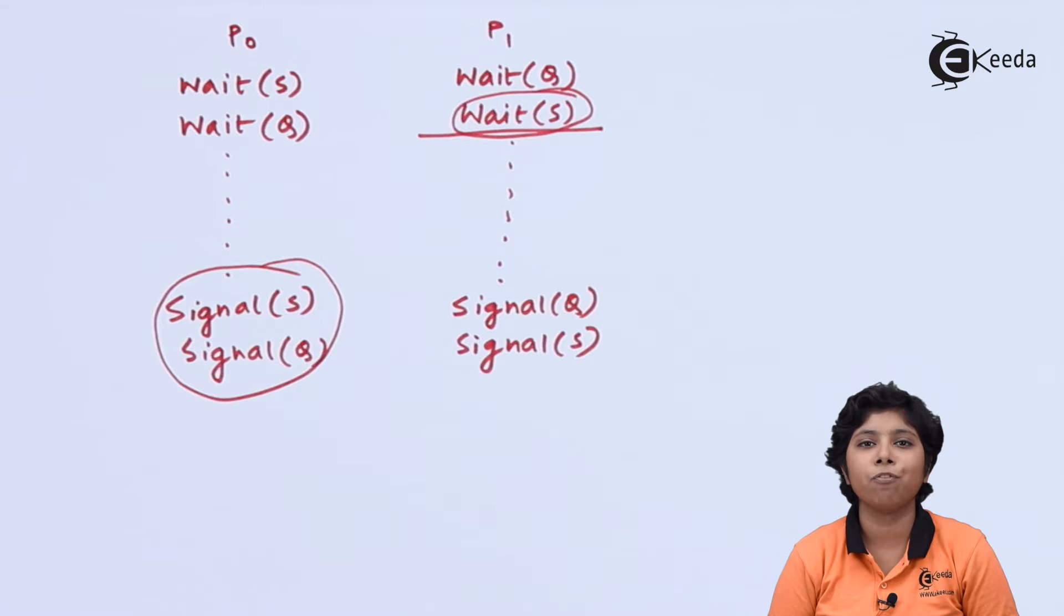Now we will talk about priority inversion. A scheduling challenge arises when a high priority process wants to access or modify the kernel data that is being accessed or modified by some low priority process.